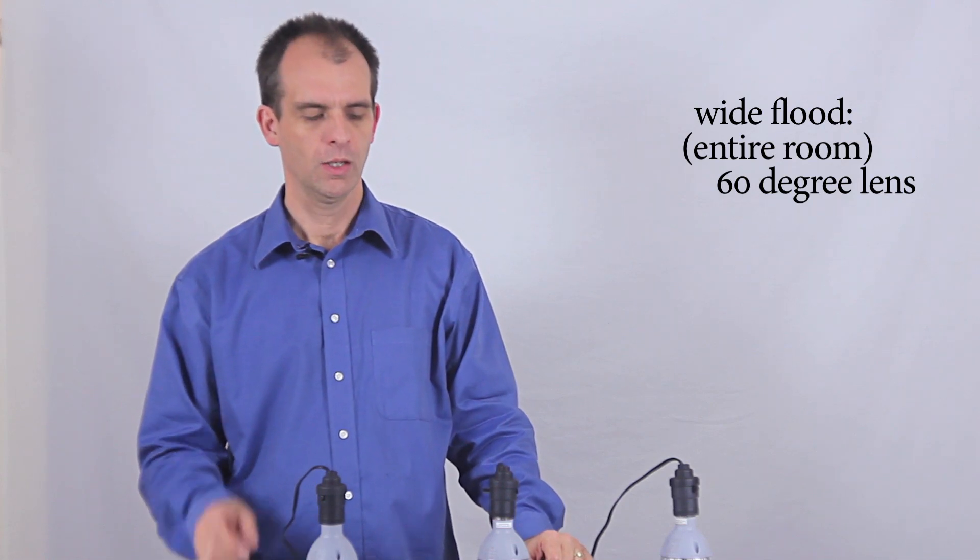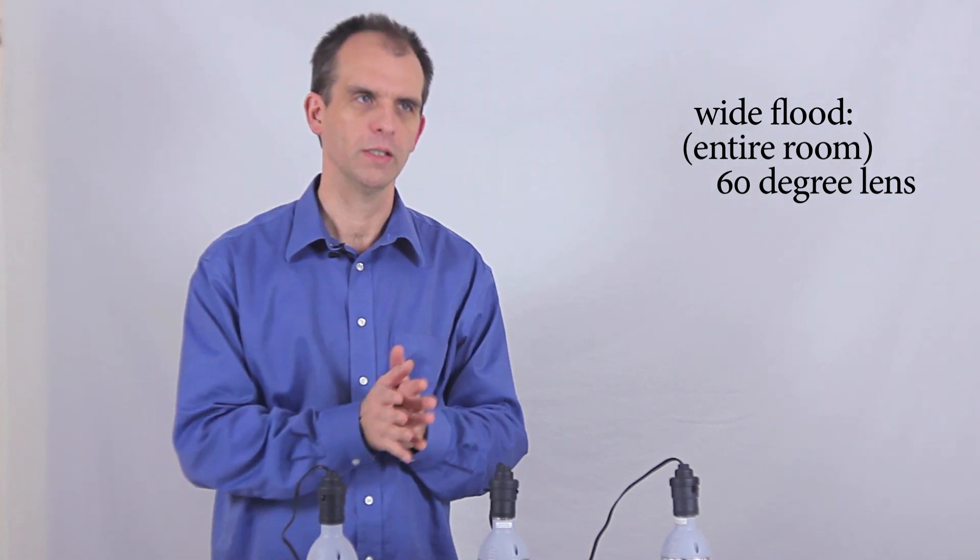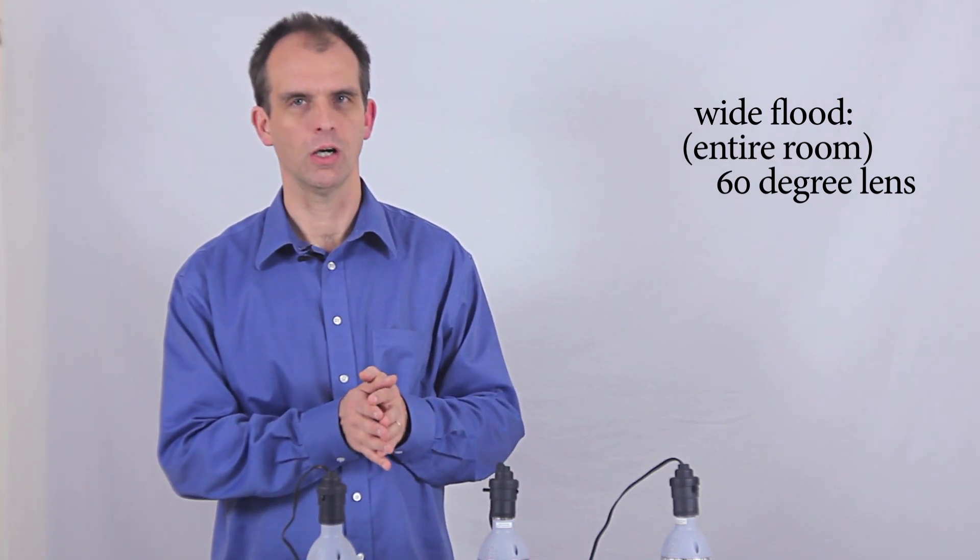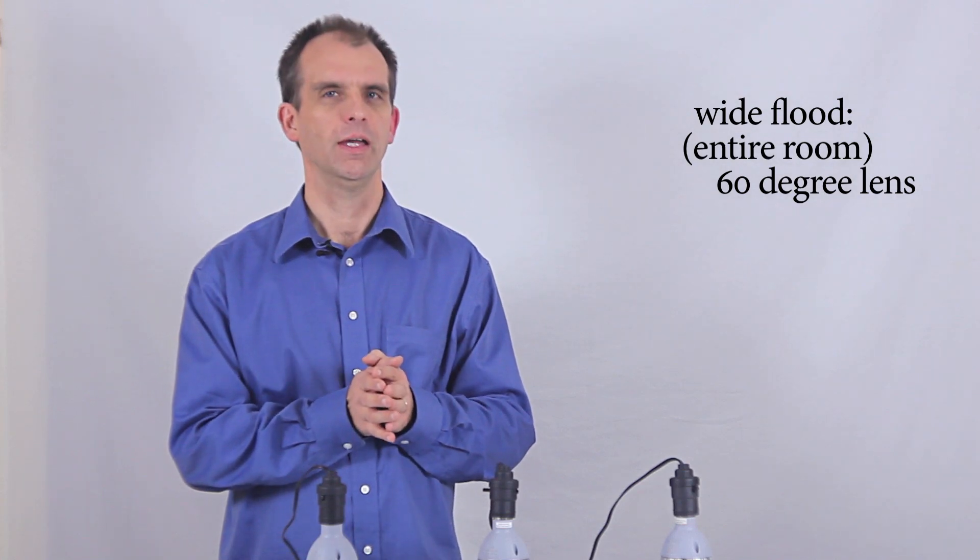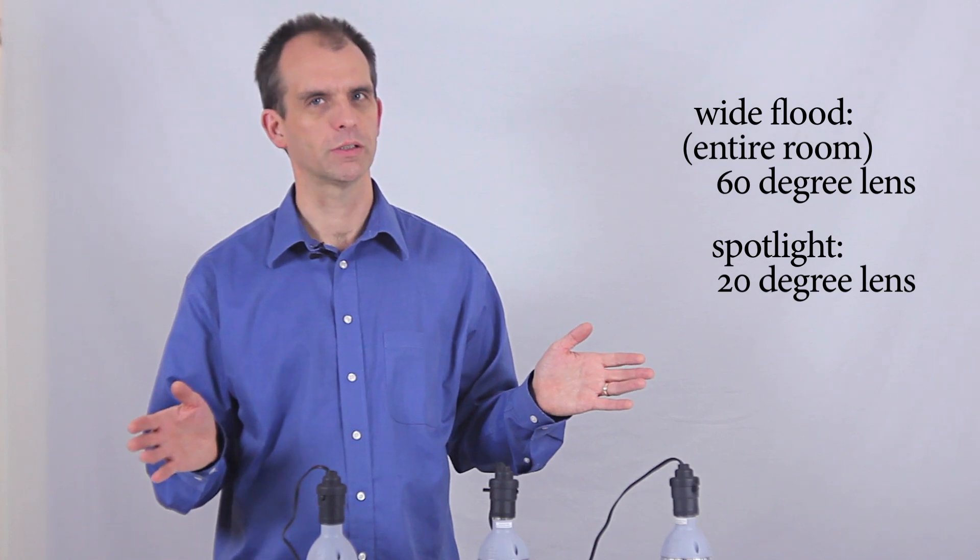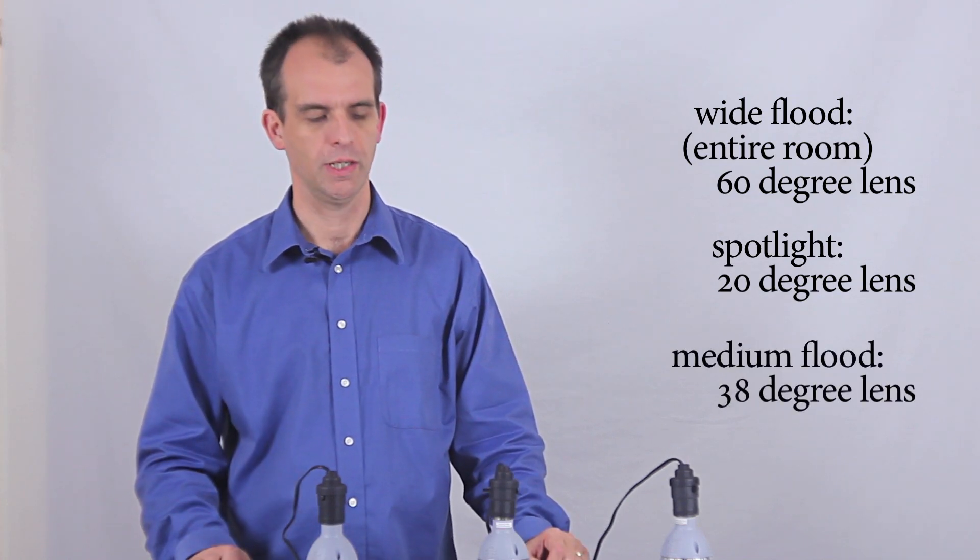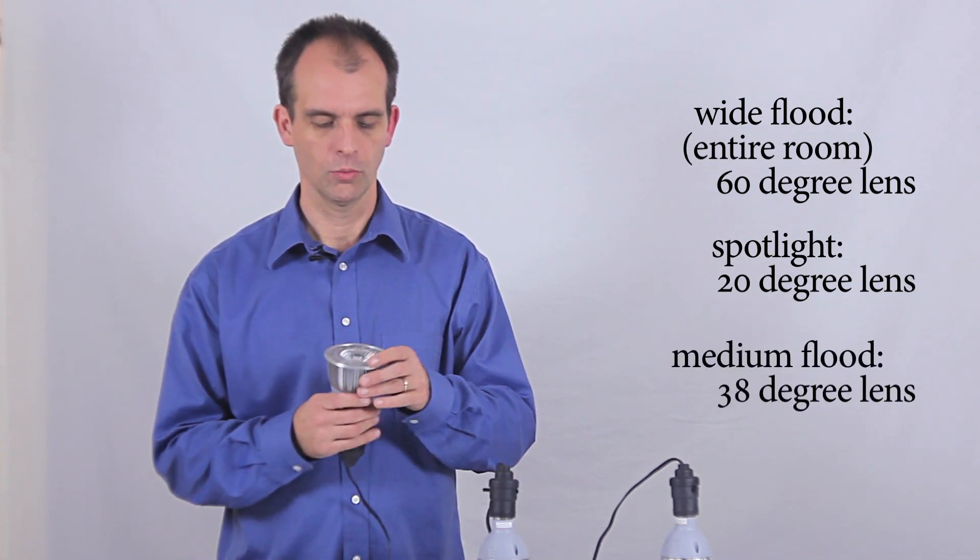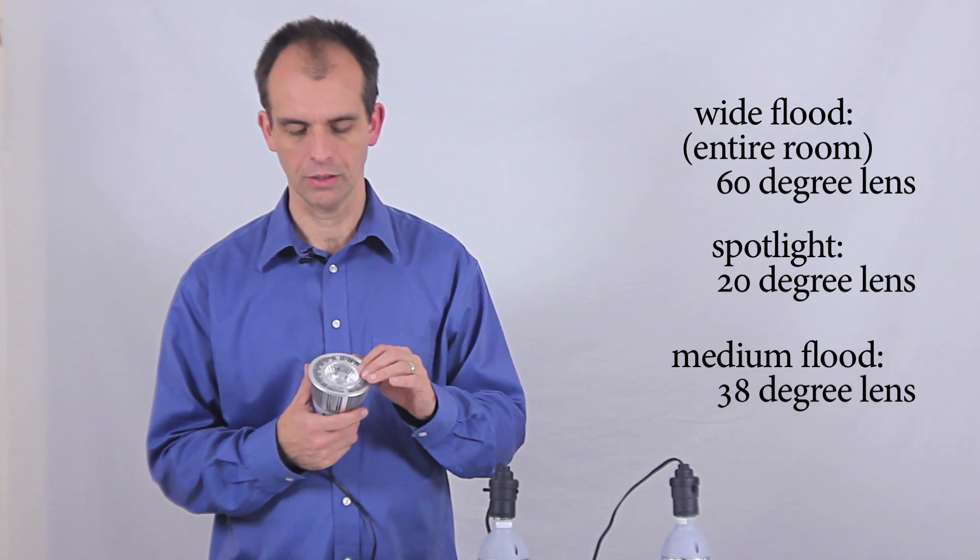So those are kind of the rules of thumb. If you're trying to get intense focus on smaller objects, then you're going to go for narrower beams. If you want general illumination, probably you want 60 degrees. If in doubt, start with 38 and you can buy some extra lenses.